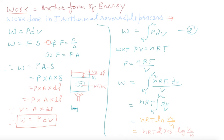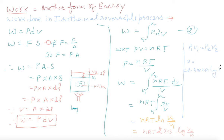Expanding further, from Boyle's law we know P1V1 = P2V2. Using this relation, another form of the work expression is: W = 2.303 nRT log(P1/P2).